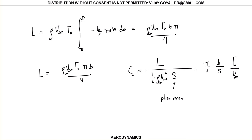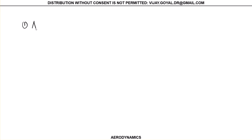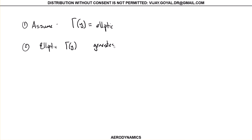Given that information, this made some assumptions. So far what we did was: the assumption was that this is completely elliptic. We also assumed that gamma sub zero generates an elliptic shape — an elliptic planform.